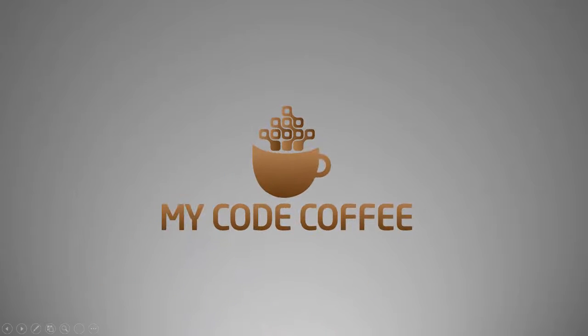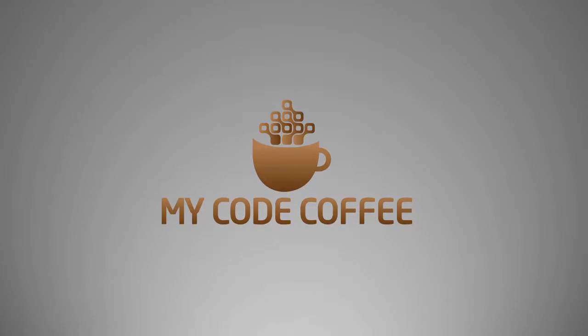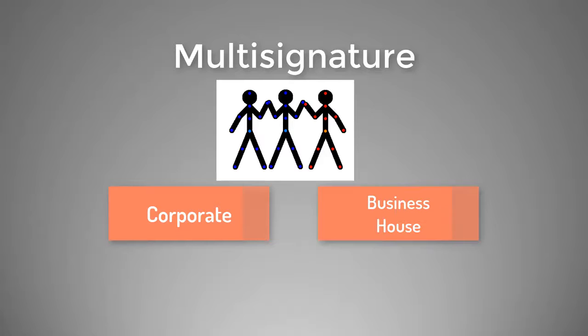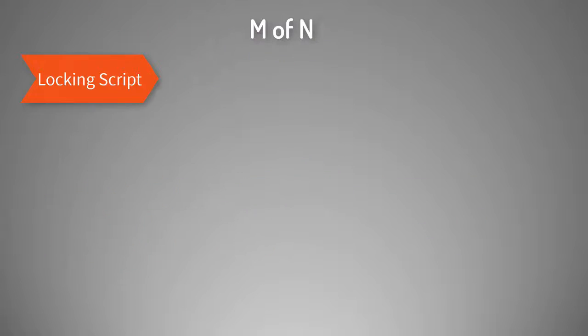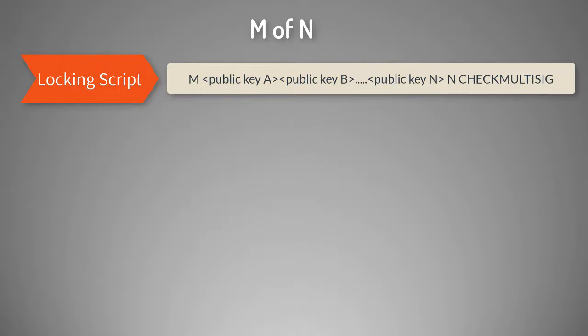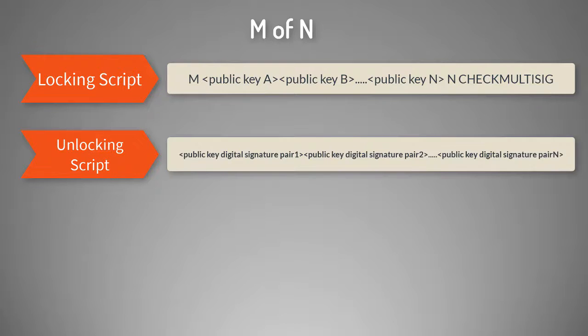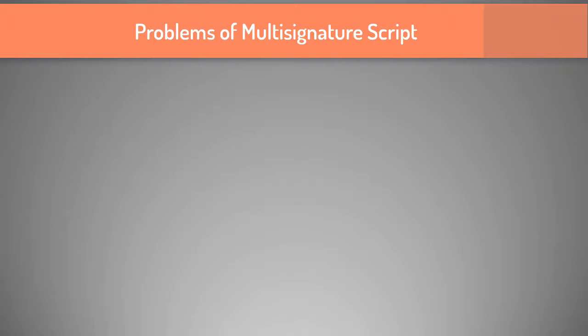Hello and welcome to MyCodeCoffee. In the previous chapter, I introduced the concept of multi-signature and explained that in the scenario where more than one person is owner of the fund, like a corporate or business house, multi-signature is extremely useful. I explained that an M-of-N locking script and corresponding unlocking script would look like specific forms, but there are practical complexities associated with multi-signature.